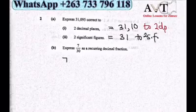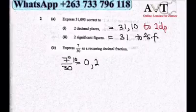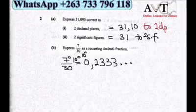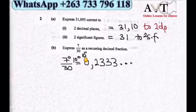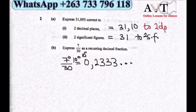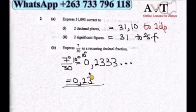For part B on recurring decimals: 7 over 30. Dividing 7 by 30 gives 0.2 remainder, then 13 into 100 is 3 remainder 10, and we keep getting the same remainder. So dividing 7 by 30 gives us 0.2333... with 3 recurring. We express this as 0.23 with a dot over the 3 to show it is recurring.